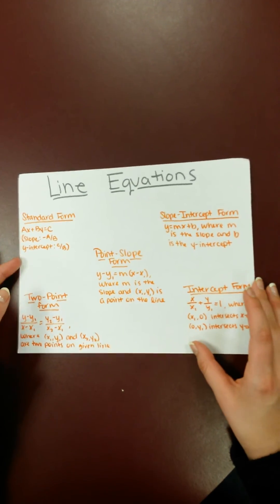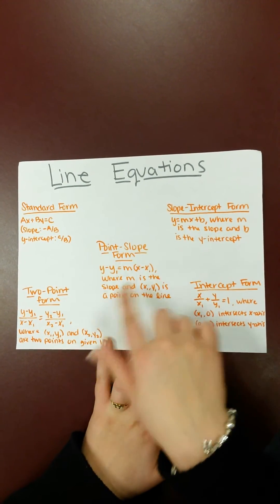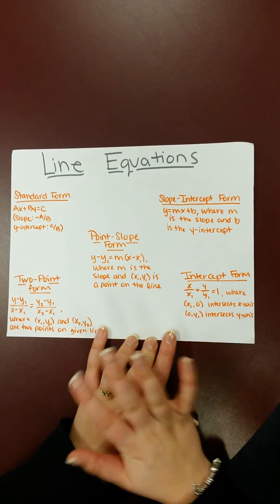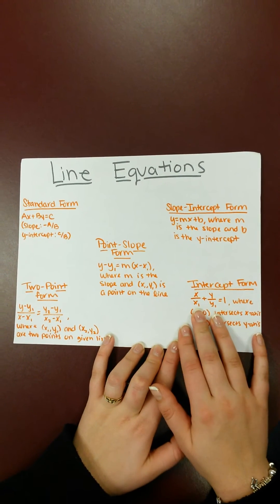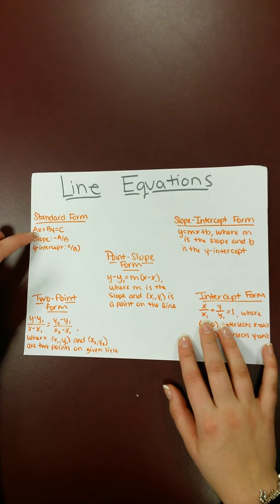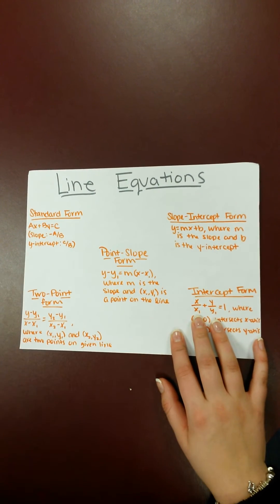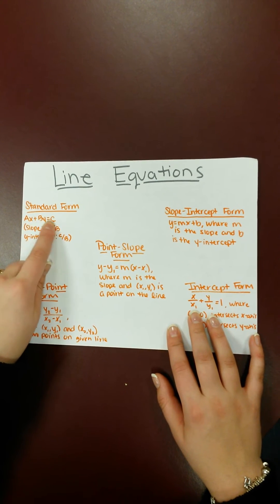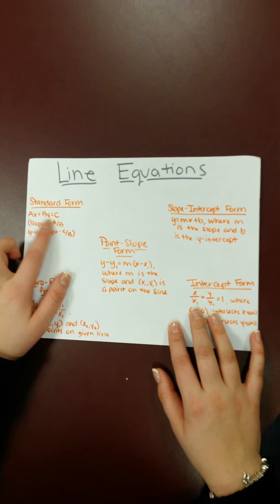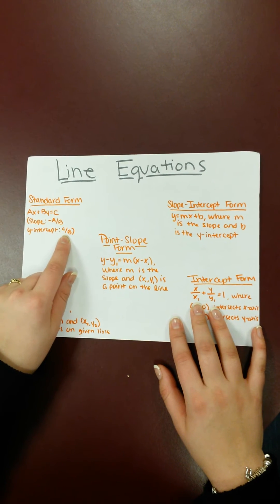So the last thing I want to talk about is line equations. These are basically the same thing. Some of them are very similar to each other, but they're just different formations, and everyone is taught different ways. For instance, here, standard form, which is the most common, is AX plus BY equals C, where your slope is negative A over B, because if you were to get rid of the X and Y and go through your multiplication division and subtraction and all that, you end up getting negative A over B, and your Y-intercept would be C over B.